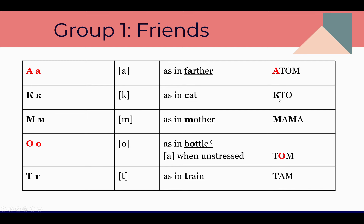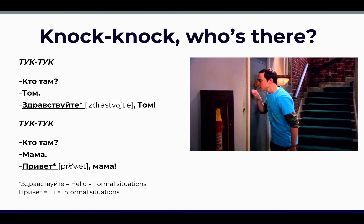We can ask: Кто там? — Who is there? And we can answer: Мама — Mother. Who is there? Мама. The topic is 'Knock knock, who is there?' In Russian: Тук-тук — Кто там? Like we're knocking at the door.